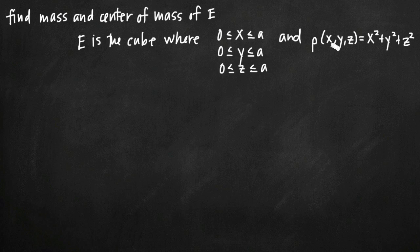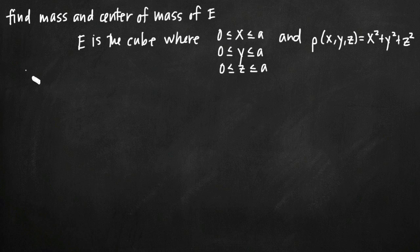We've also been given a density function for the cube, rho of x, y, z — rho is the Greek letter that looks like a p — and it's equal to x squared plus y squared plus z squared. When we're dealing with a problem like this and we've been given the domain for each of our three variables and a density function, all we need to do is set up our triple integral. This triple integral is going to be for the mass.